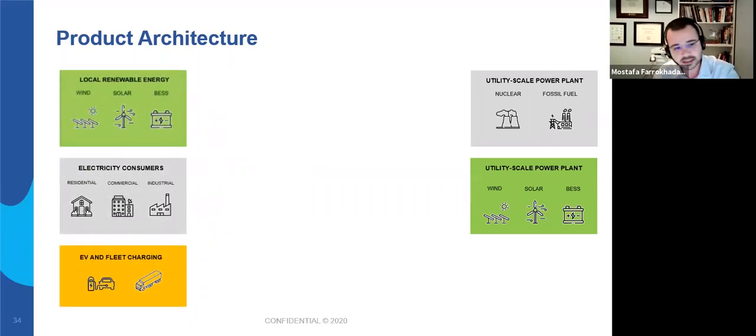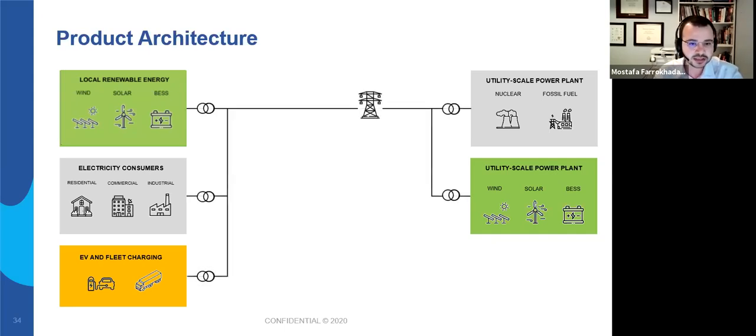There is the distribution system side, which includes customers and consumers of energy: residential, commercial, industrial, local distributed energy resources such as rooftop solar panels, medium voltage level wind farms, and the newly emerging segment of EV and fleet charging stations. These two sections are connected through the high voltage transmission line.